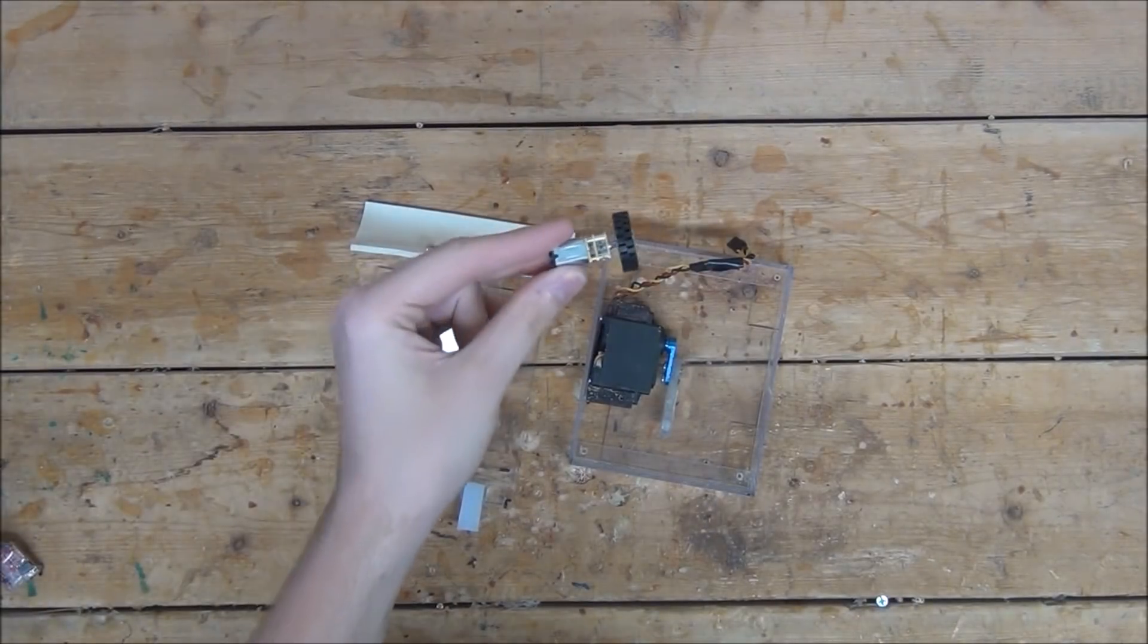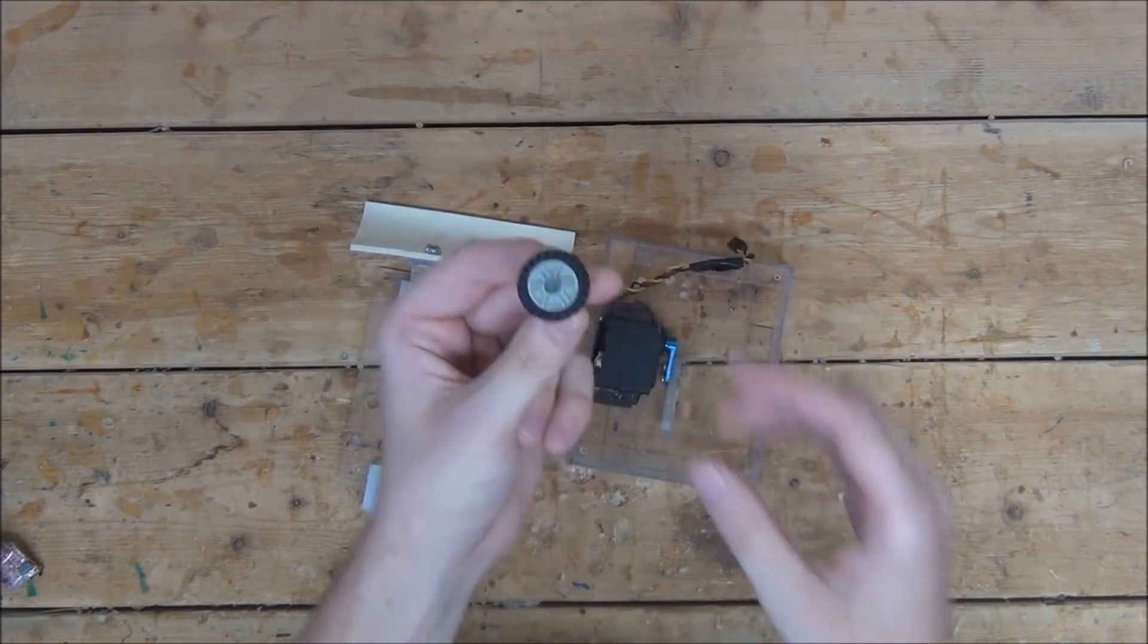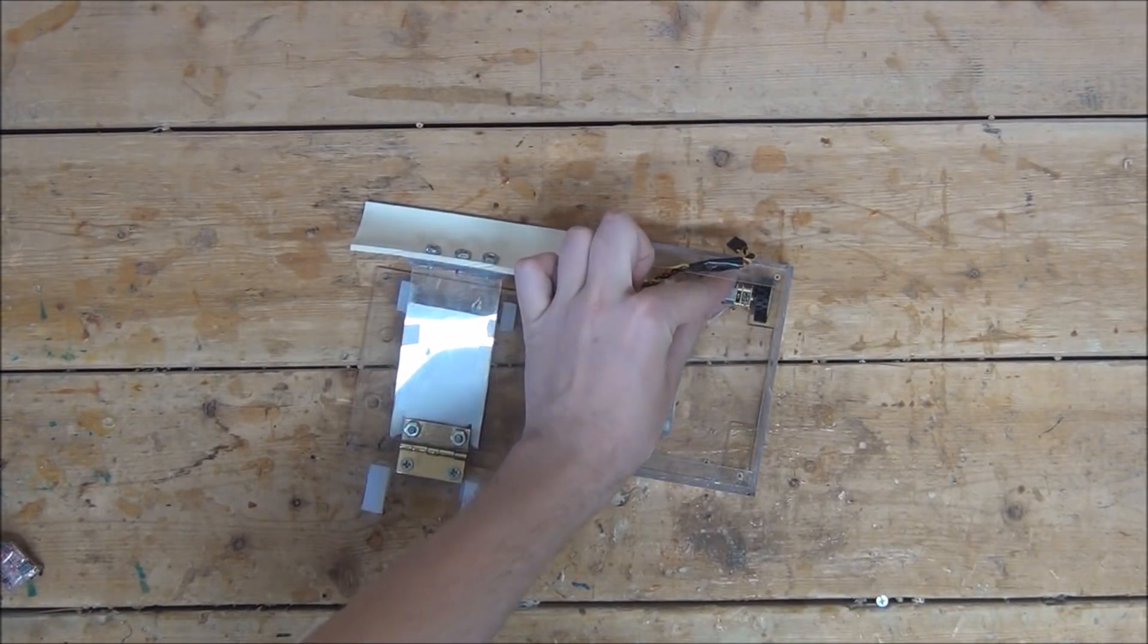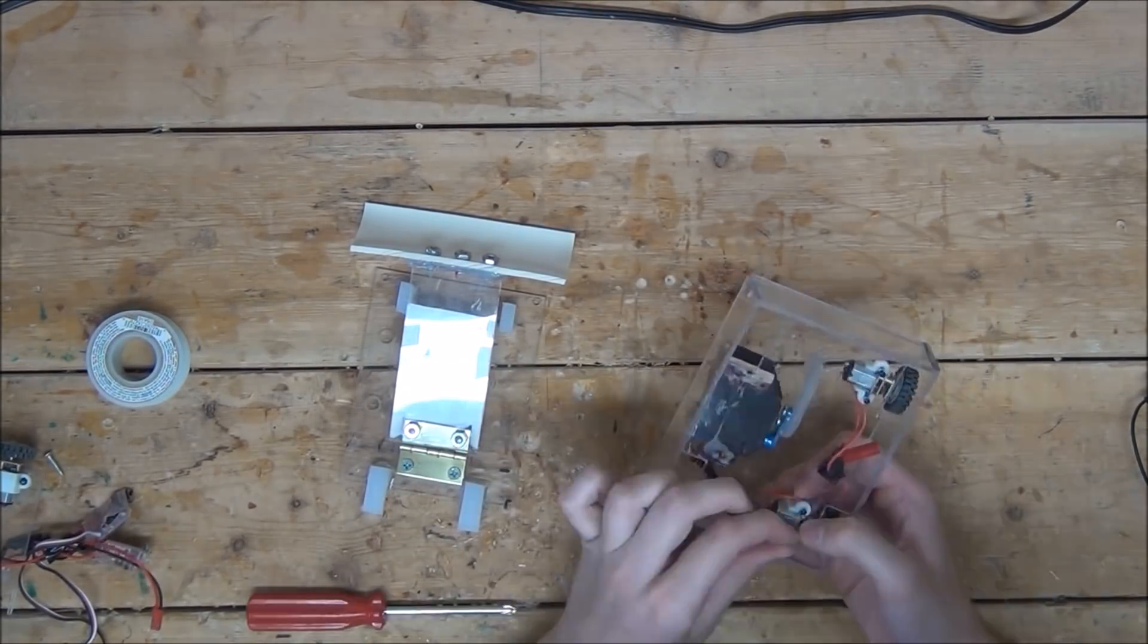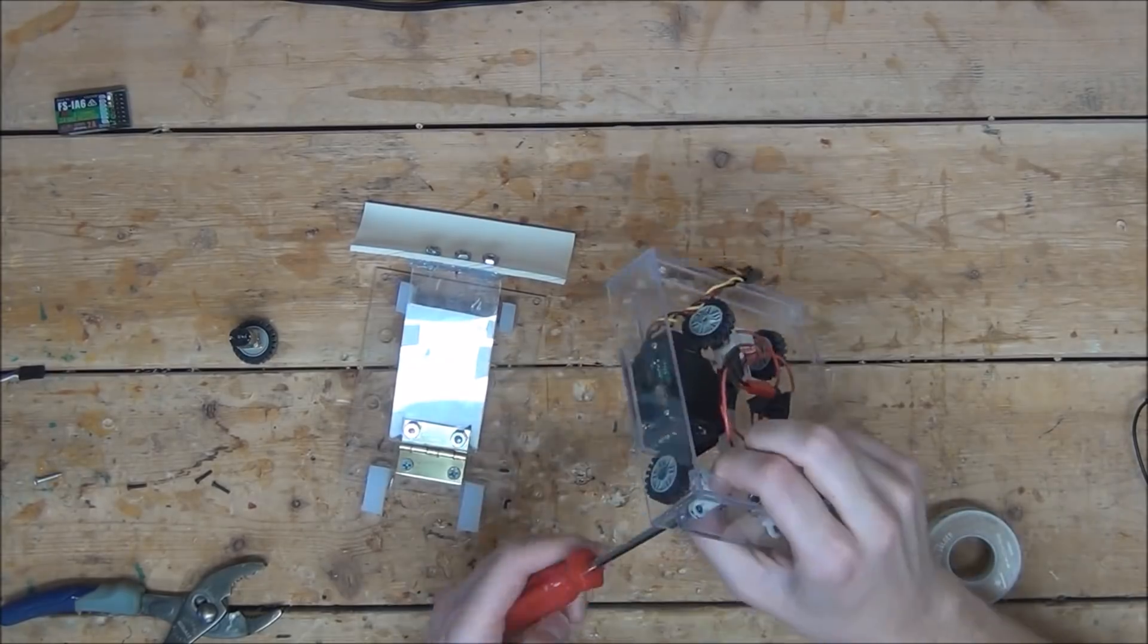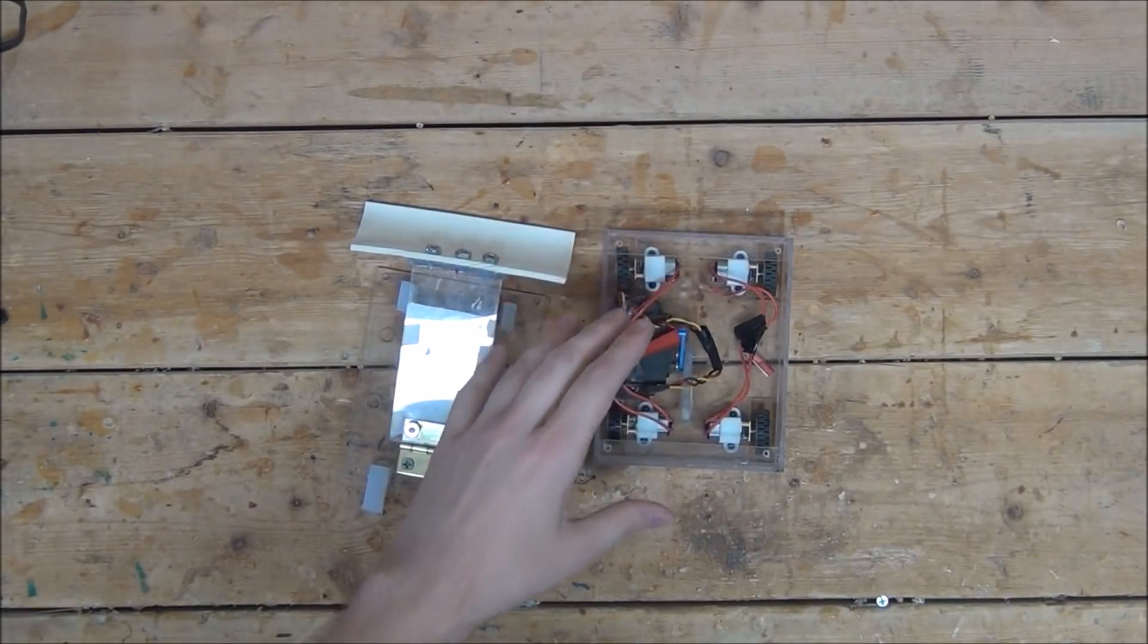Next, I'm going to take four 600 RPM 12-volt geared motors I've attached little LEGO wheels to and mount them at each corner of the robot. Just like that.